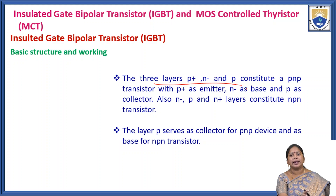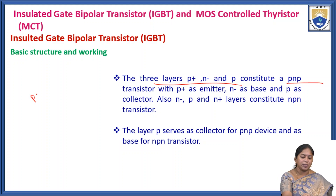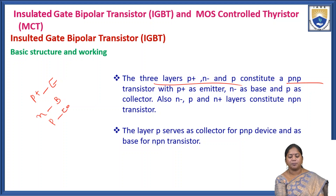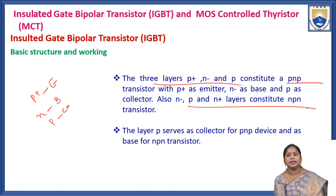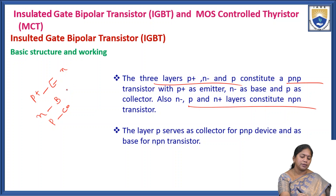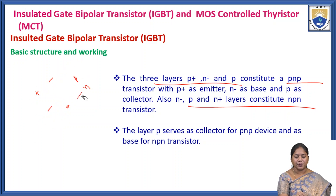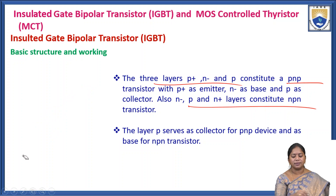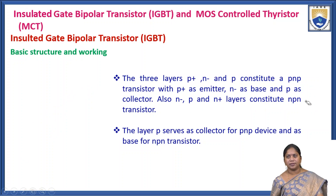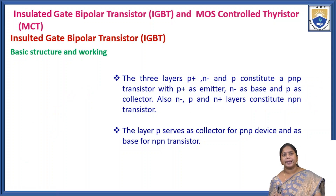The three layers P+, N, and P constitute the PNP transistor, with P+ as emitter, N as base, and P as collector. In the NPN transistor similarly, N is emitter, P is base, and N is collector. The layer P serves as collector for the PNP device and as base for the NPN transistor. The IGBT can thus be viewed as two transistors — a PNP and an NPN — connected back to back.